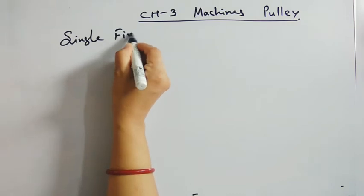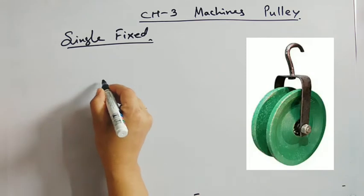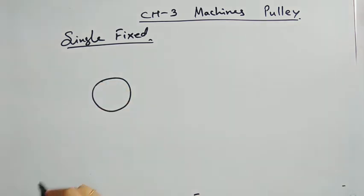Now single fixed pulley - first of all you should understand that it is a circular disc with a grooved rim. It has an axis of rotation which is called axle, which is fixed about a rigid support.